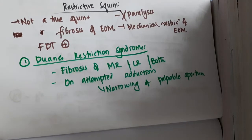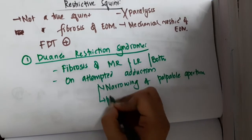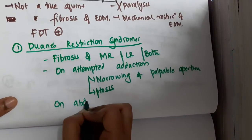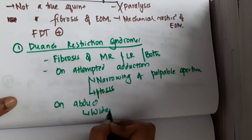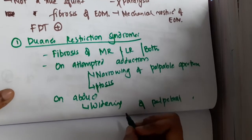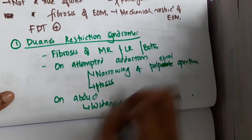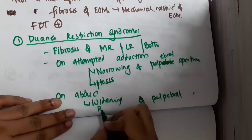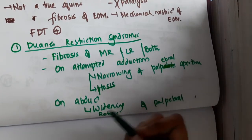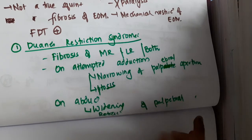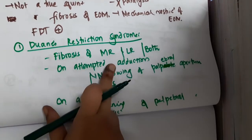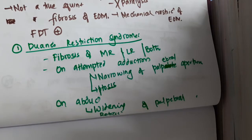In Duane's restriction syndrome, you can also see the presence of ptosis. On abduction, there is widening of the palpebral fissure and retraction. So on adduction there is narrowing of the palpebral aperture, and on abduction there is widening. This occurs because of fibrosis of the medial rectus and lateral rectus.